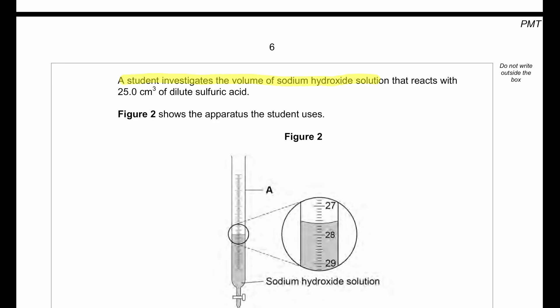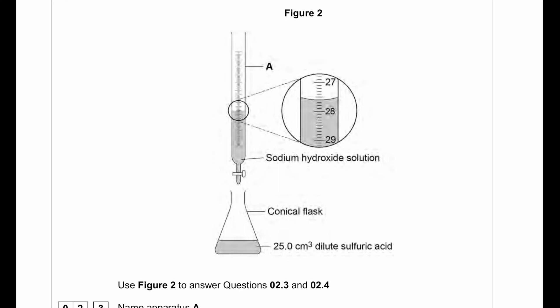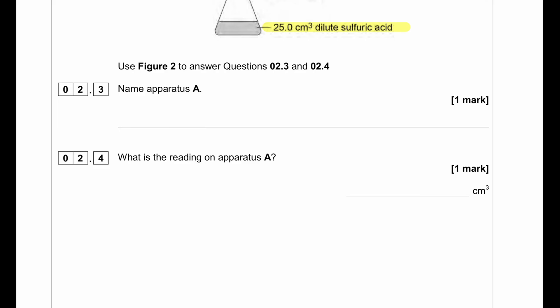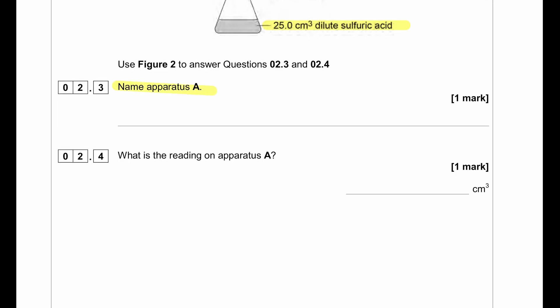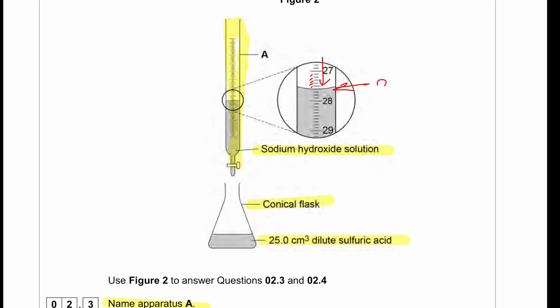A student investigates the volume of sodium hydroxide solution that reacts with 25 cm³ dilute sulfuric acid. Figure 2 shows the apparatus the student uses. We can see a burette to put the sodium hydroxide and the conical flask is holding dilute sulfuric acid which is 25 cm³. Name apparatus A. Apparatus A is a burette. What is the reading on apparatus A? To read apparatus A we read from the top side down: 27.1, 27.2, 3, 4, 5, and then 6. So this reading will be 27.6. We have to read the lower meniscus.